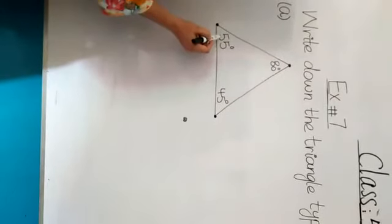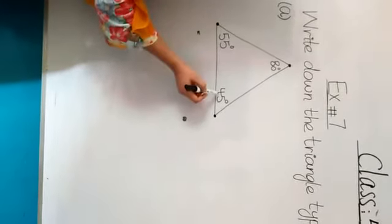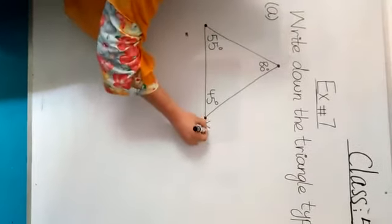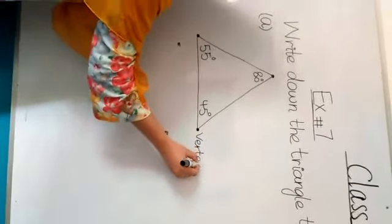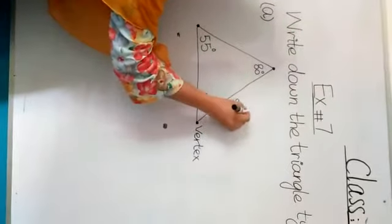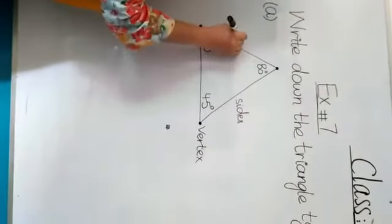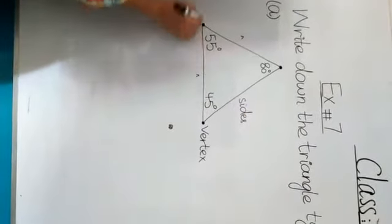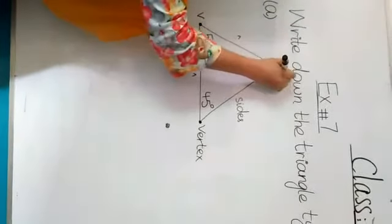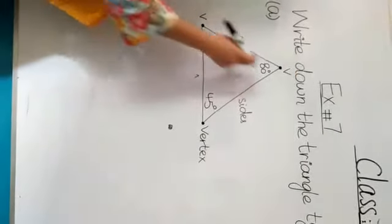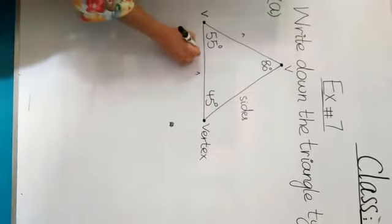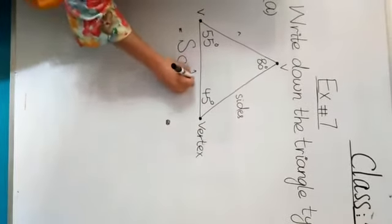80, second side is 55 and third one 45. So common points are called vertices and these are called sides. This one and this one. So this is vertex and this is vertex. So no equal sides. All 3 sides are not equal. So it is called scalene triangle.